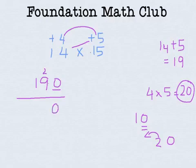0. 9 plus 2 gives us 11. 1. Carry over 1. 1 plus 1 gives us 2. So the product is 210.